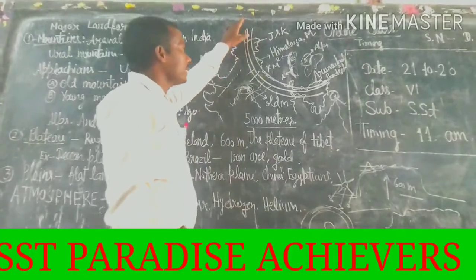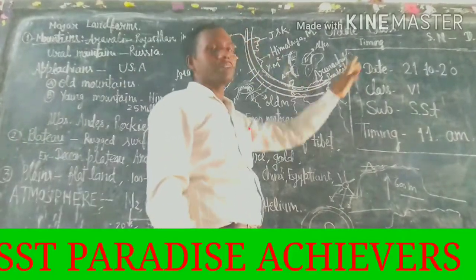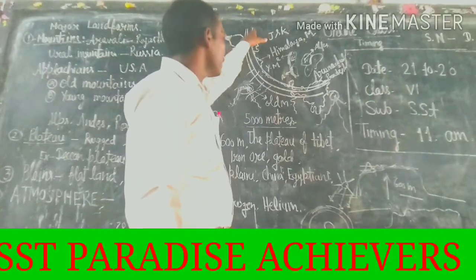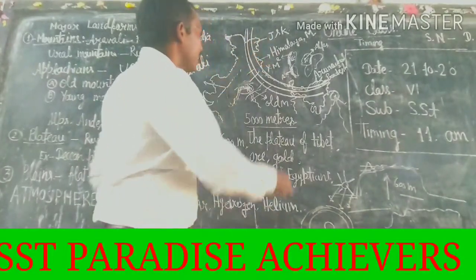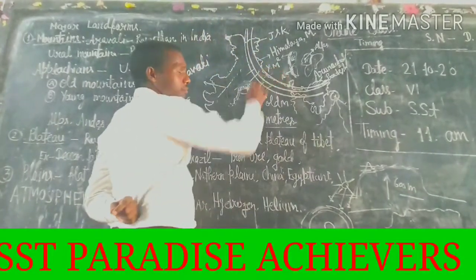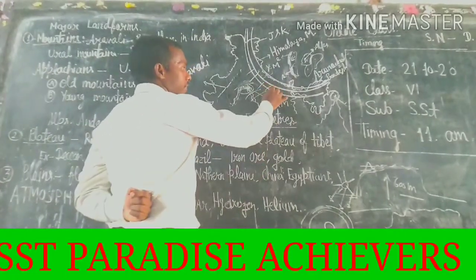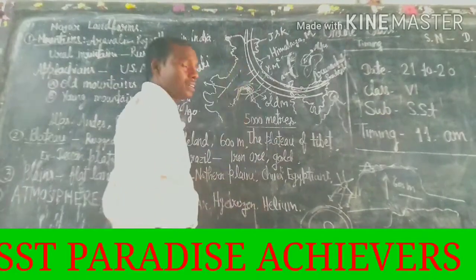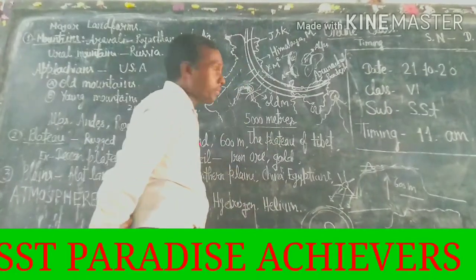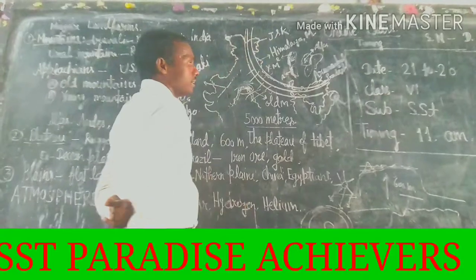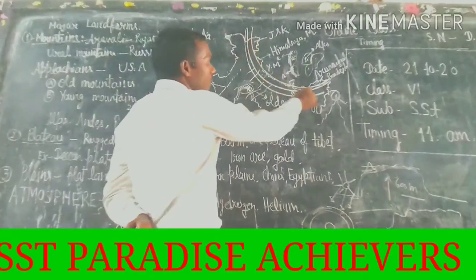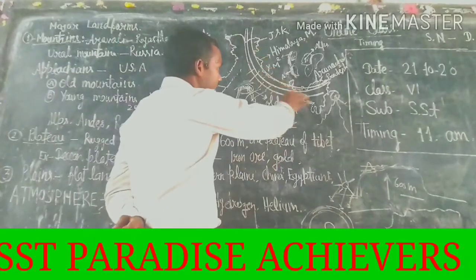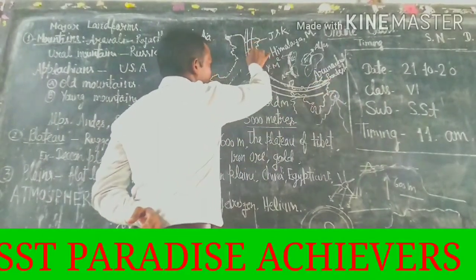Here you can see three ranges of mountains. The first range is the Great Himalayas. The second range is the Middle Himalayas. And the third is the Shivalik Himalayas. These are the three ranges, and these are examples of young mountains. It is spread from Uttarakhand to Arunachal Pradesh — this is the series of mountains.